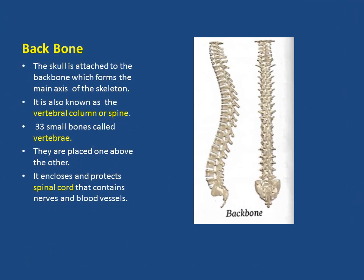Which is the most important part of a skeleton? The backbone. The skull is attached to the backbone, which forms the main axis of the skeleton and helps us to stand erect. It is also known as the vertebral column or spine, and is made of 33 small bones called vertebrae. They are placed one above the other and allow us to bend and twist our back. The backbone encloses and protects the spinal cord, which contains nerves and blood vessels.